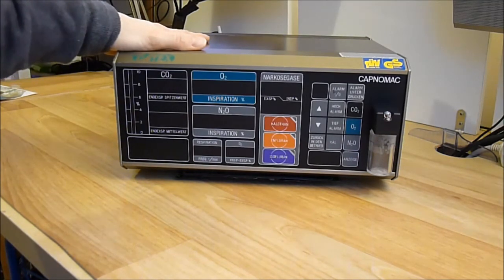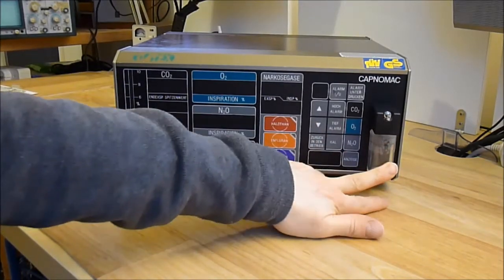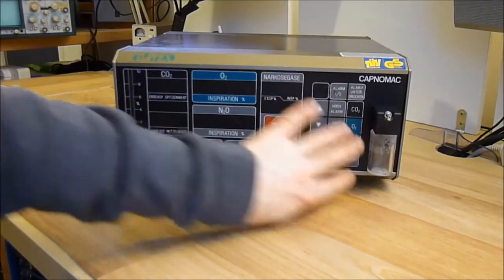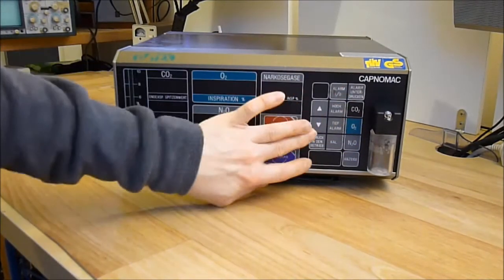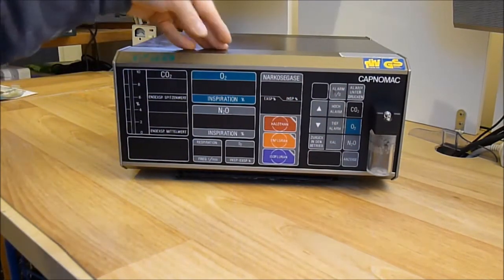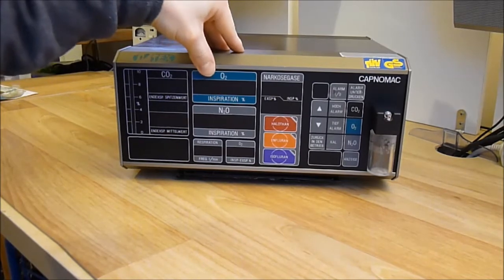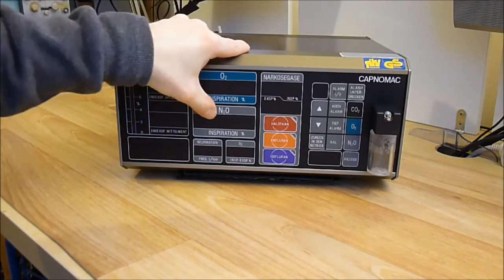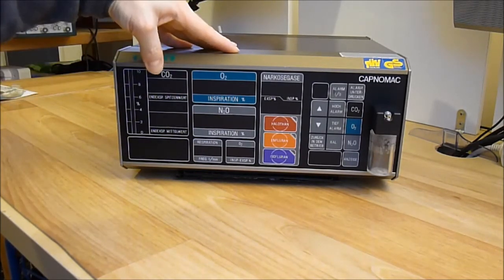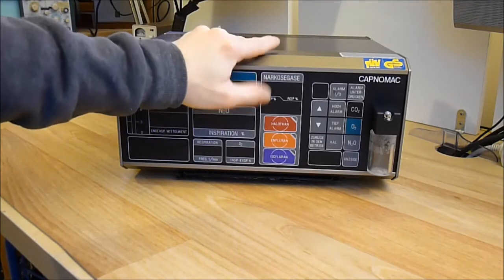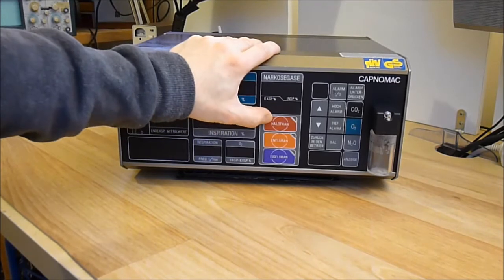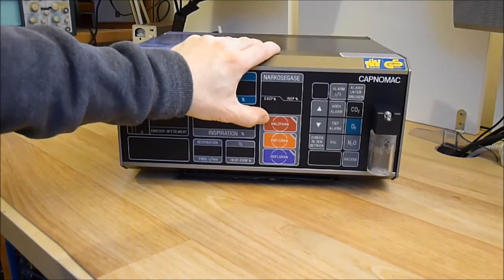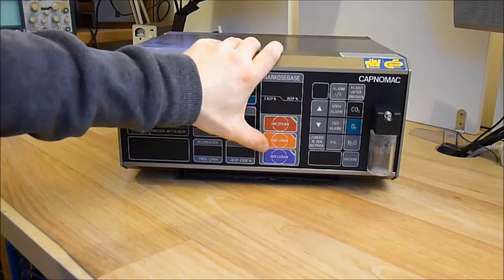So we have one air input here with a water trap. Quite a neat LED display and some keys. As you can see, it measures O2, N2O, CO2 and the anesthesia gas mixture. It works with three anesthesia gases: halothane, enflurane and isoflurane.